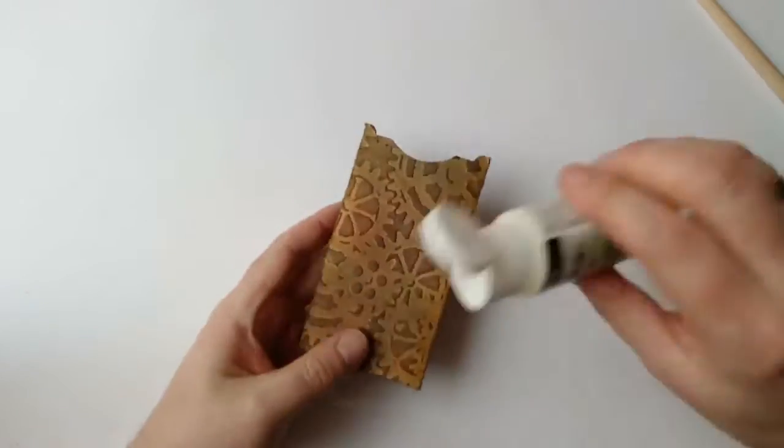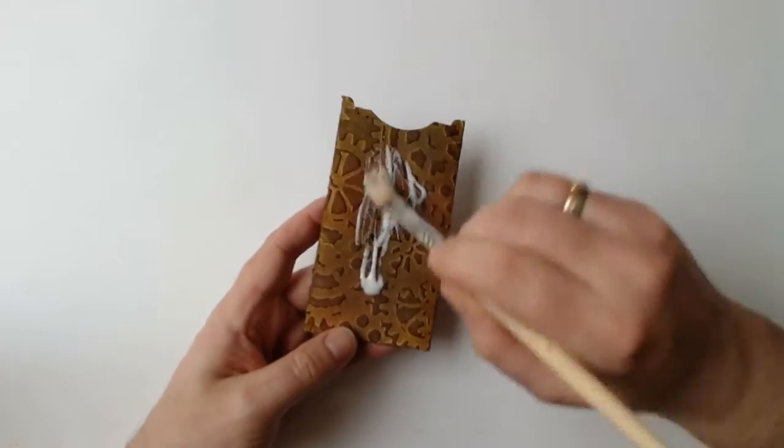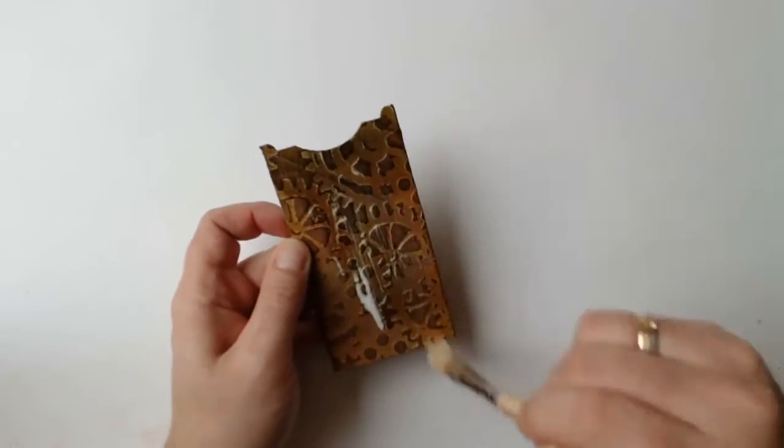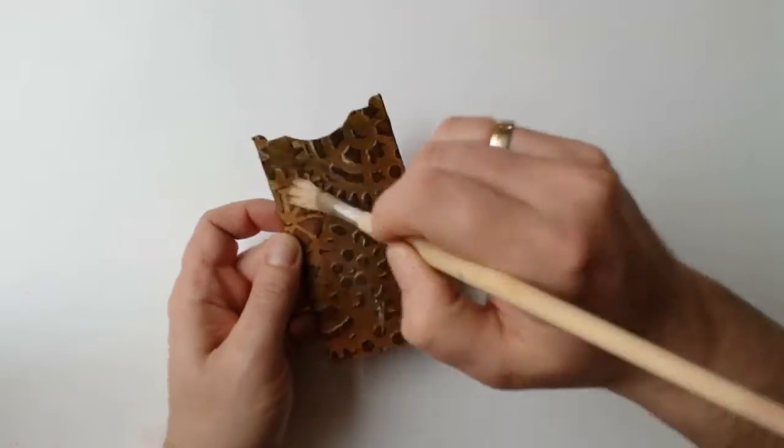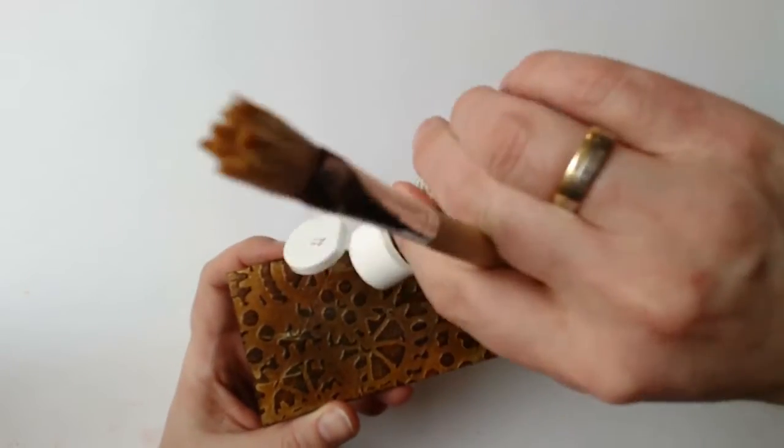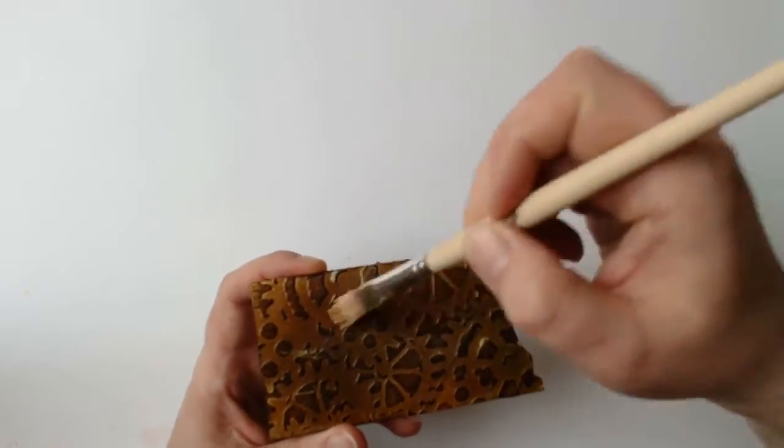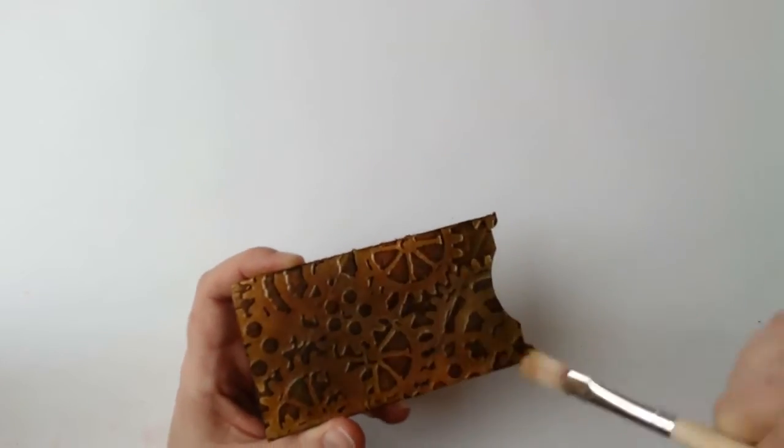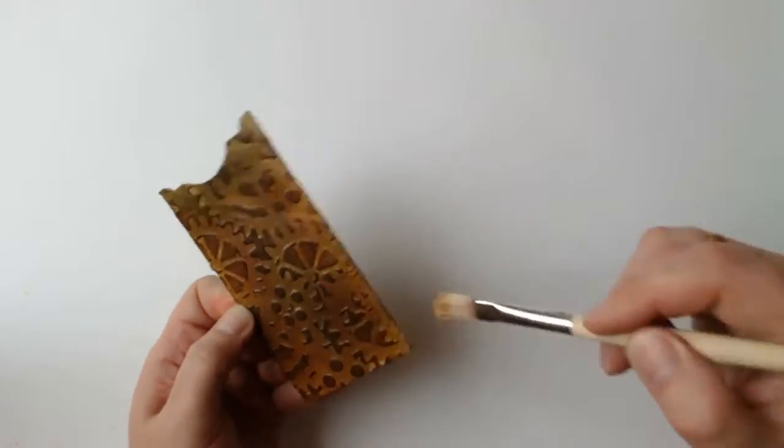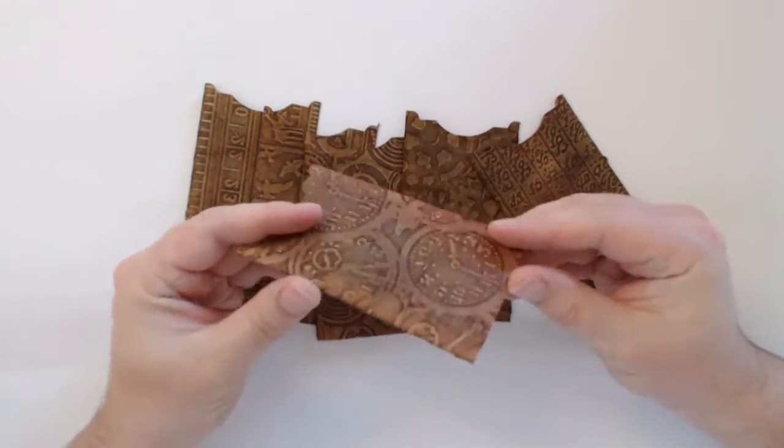As all the pages are inked with distress ink, I'm now using glossy medium gel to seal the surface and give it a silky shine. And now the pages pretty much look like old leather.